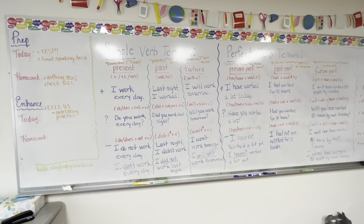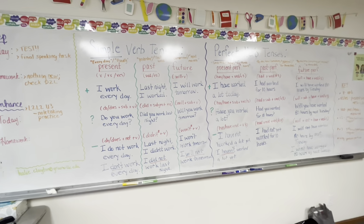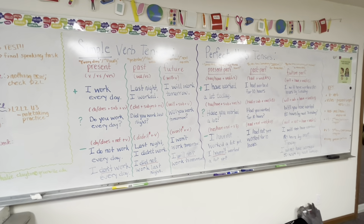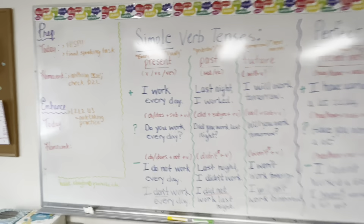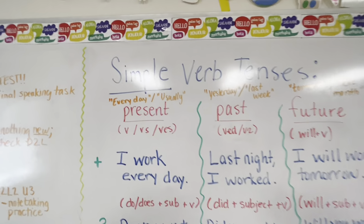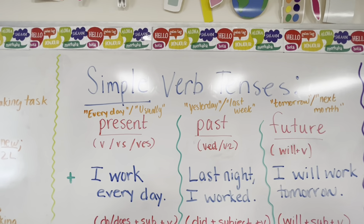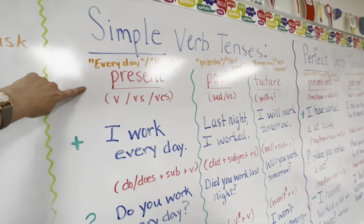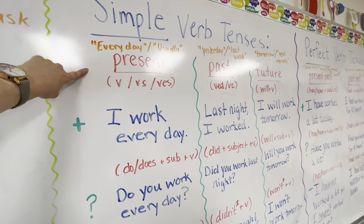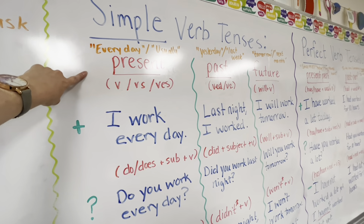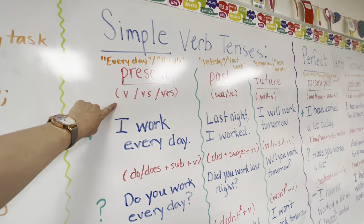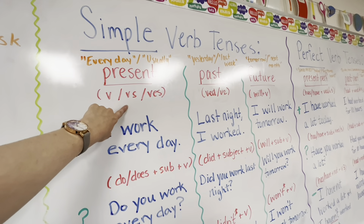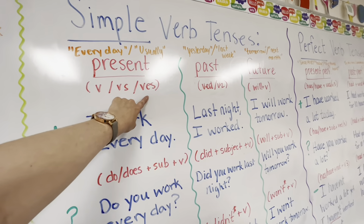Let's do a review, a rundown of verb tenses. We're going to start with simple verb tenses. Present simple is made by using the verb, the verb with S, or the verb with ES.